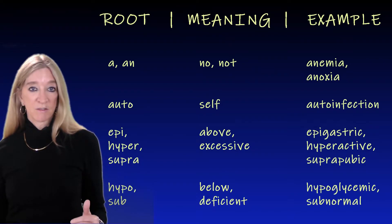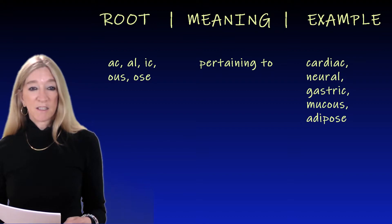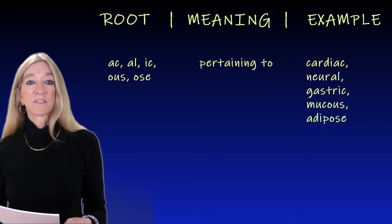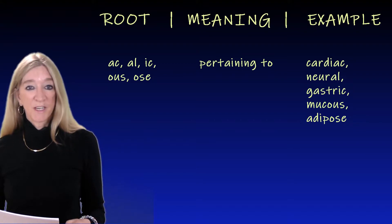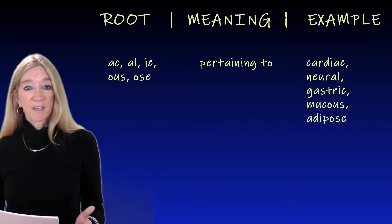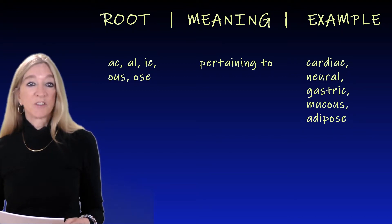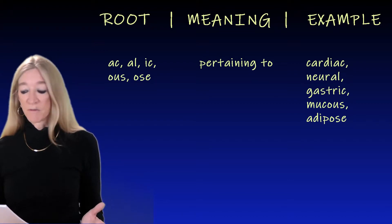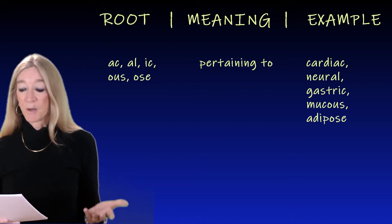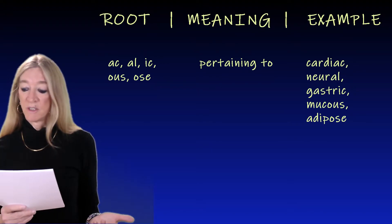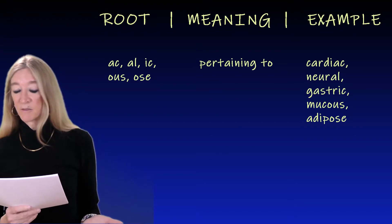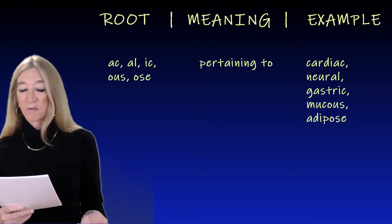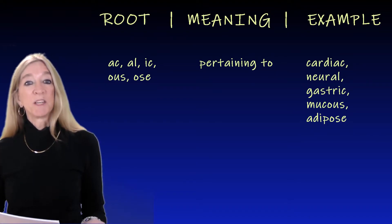The next roots, 'ac,' 'al,' 'ic,' 'us,' and 'os,' meaning pertaining to. Examples are cardiac — pertaining to the heart — neural — pertaining to nerves — gastric — pertaining to the stomach — mucus — pertaining to mucus — and adipose, pertaining to fat. Everyday examples include insomniac, elegiac, usual, actual, factual, magnetic, athletic, barbaric, famous, joyous, ruinous, grandiose, and bellicose, meaning pertaining to war.